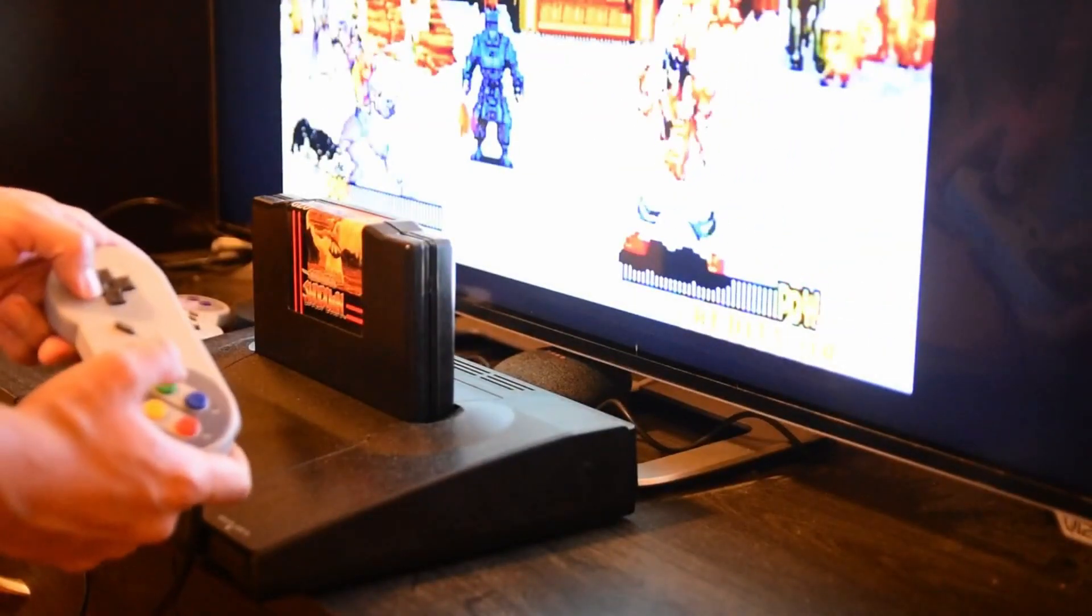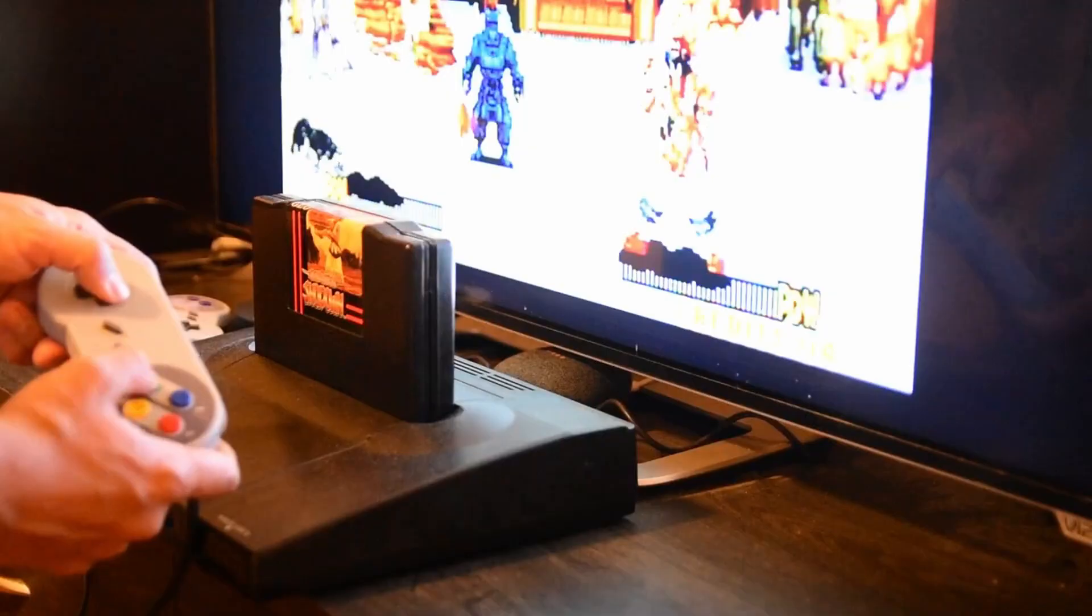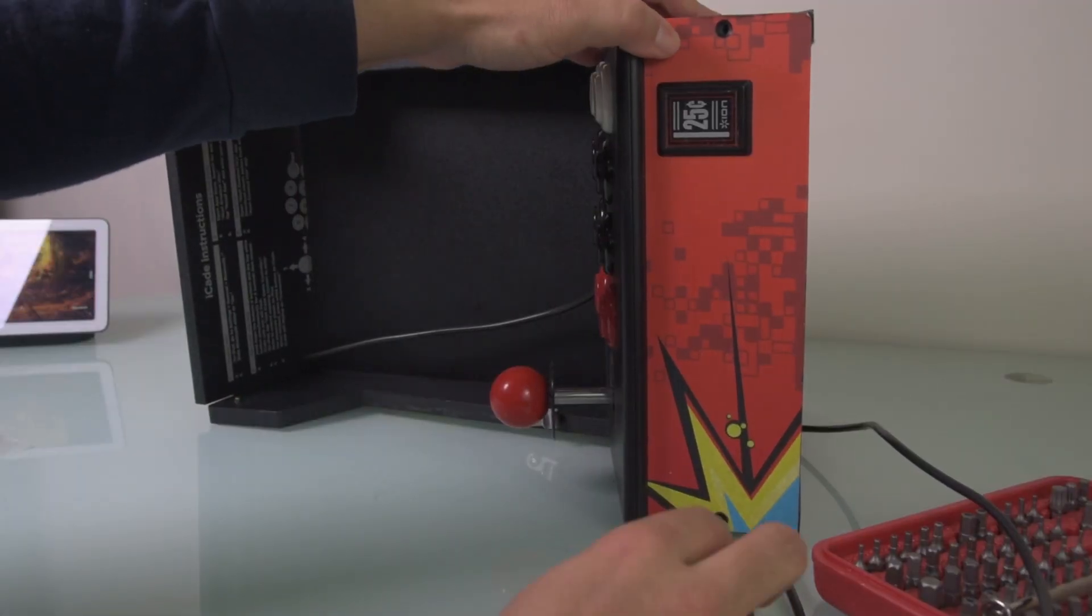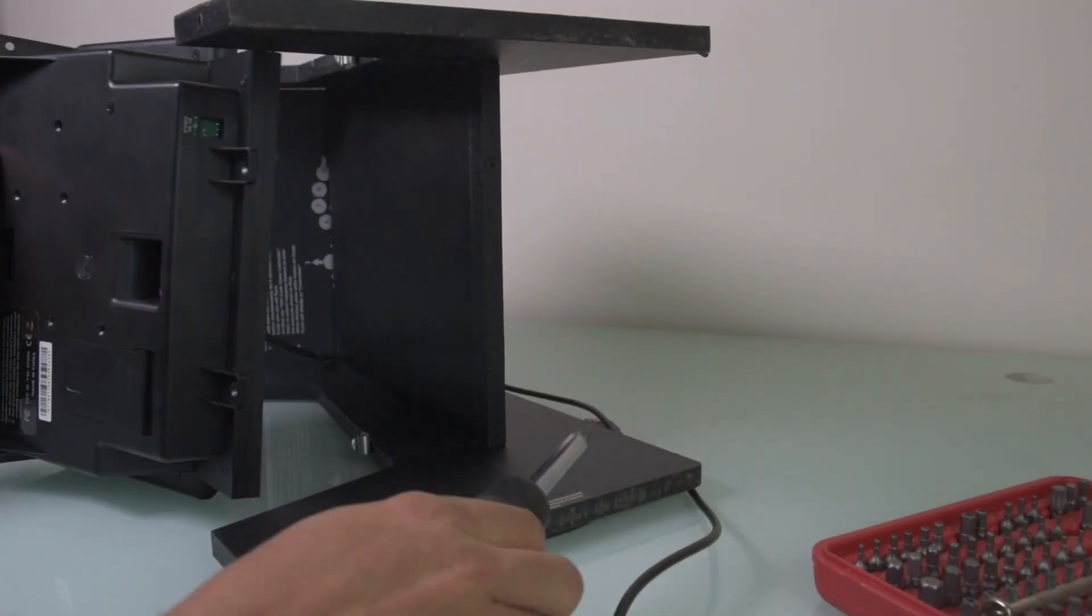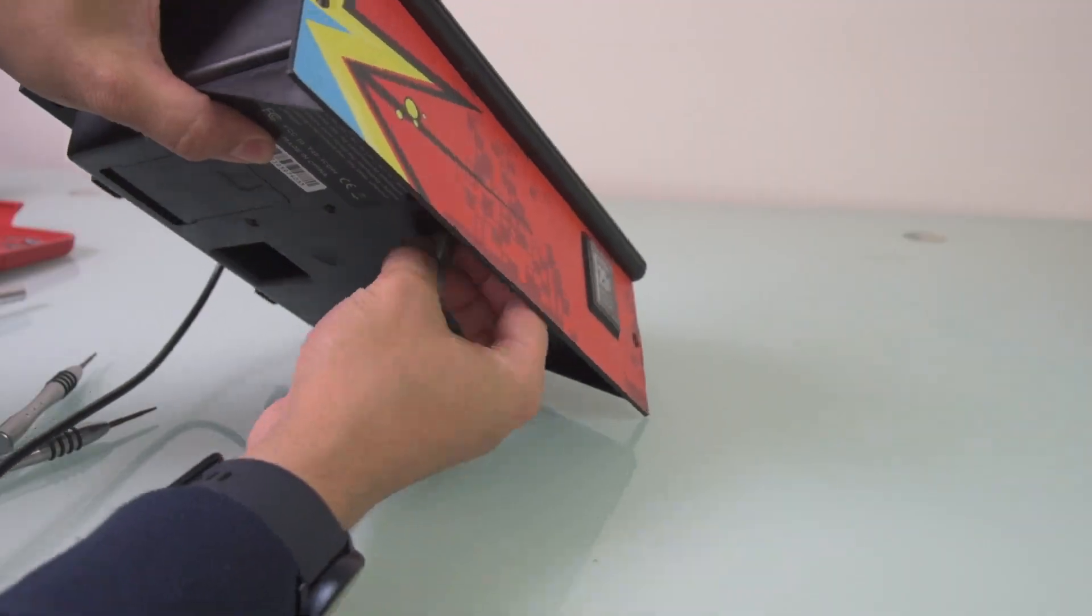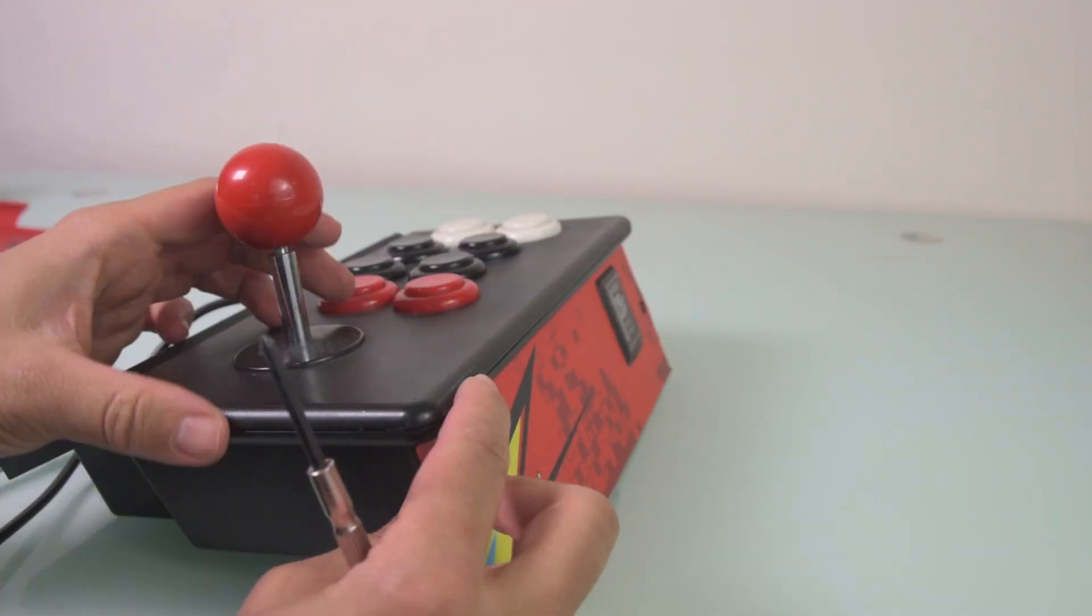To start everything off, I need to do some research. So to know what I was working with, I unscrewed the cabinet until I just had the joystick base. I also unscrewed the joystick base to see the wiring inside.